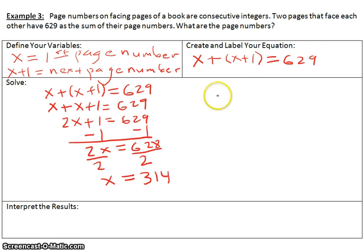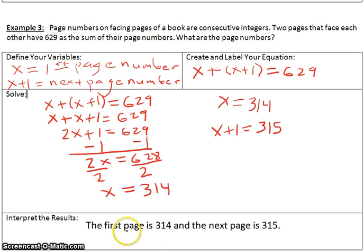Now 314 is our first page. So we have X is 314, that represents our first page. And then X plus 1, which represents our second page, would be 315. Now we want to interpret the results. The results are the first page is 314 and the next page is 315.